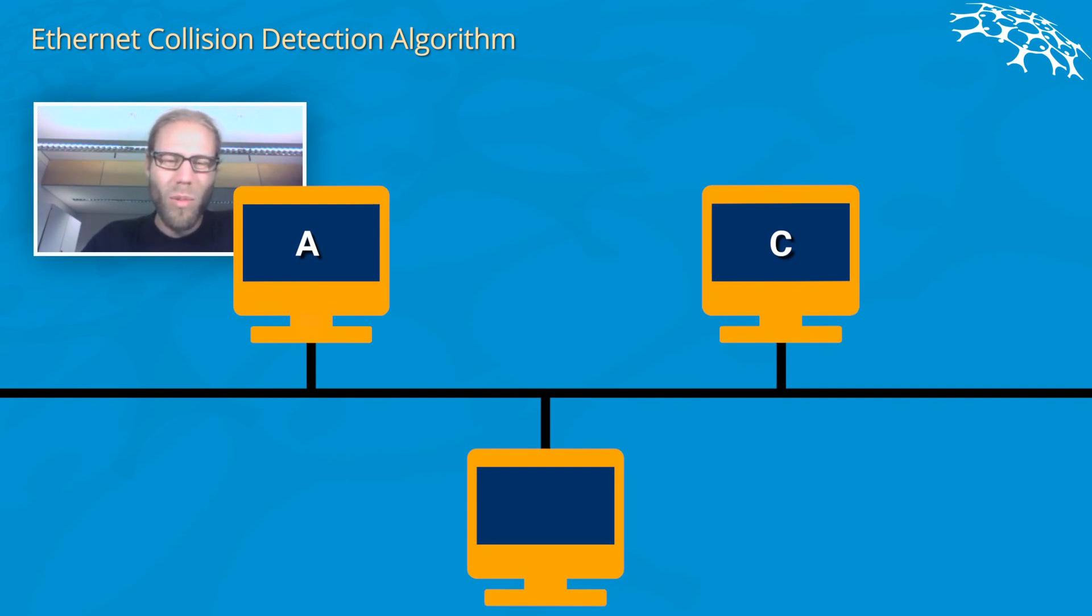What's also happening at this point in time is that computer B already started sending some data. As we saw in the last video, computer B needs a certain time to occupy the entire medium. When computer A starts to transfer data, computer A doesn't know that another computer is already trying to occupy the cable, and computer A will start sending.